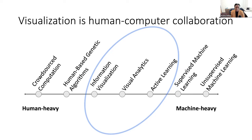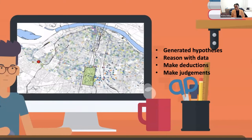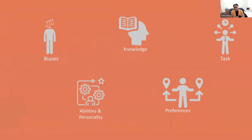We think of human-computer collaboration as a spectrum, from really human-heavy to machine-heavy. Visualization sits in the center, where we try to figure out from a human-centric perspective how to embed active learning to assist the user, but also how to embed humans in the active learning process. When someone uses a visualization, they generate hypotheses, reason with data, make deductions and judgments. Embedded in this relationship, humans also bring their biases, knowledge, personal abilities, preferences, and specific tasks.